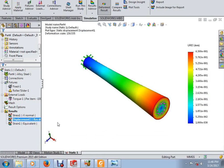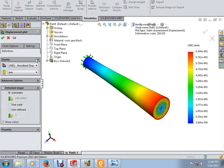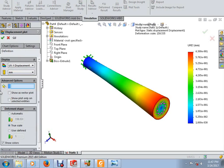Once again, we are using a large scale. Right click on the displacement, edit definition, select the displacement in y axis and y direction, use the true scale, okay.